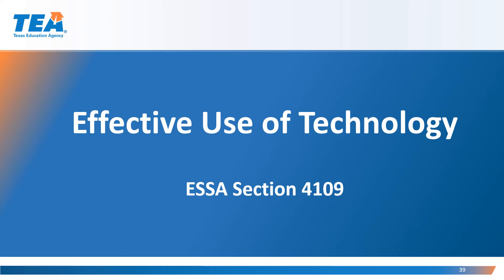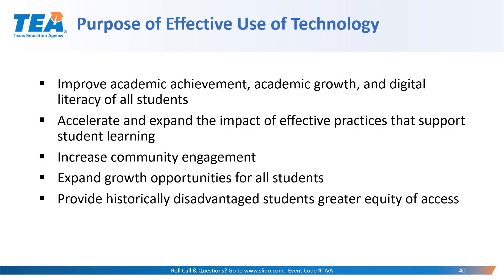The third content area of Title IV Part A is the Effective Use of Technology. Additional guidance may be found in ESA Section 4109, as well as the Program Guide 2.0 and the Title IV Part A Topical FAQs. The main purpose is to improve academic achievement, academic growth, and digital literacy of all students; accelerate and expand the impact of effective practices that support student learning; provide historically disadvantaged students greater equity of access; and involve the community in expanding growth opportunities for all students.